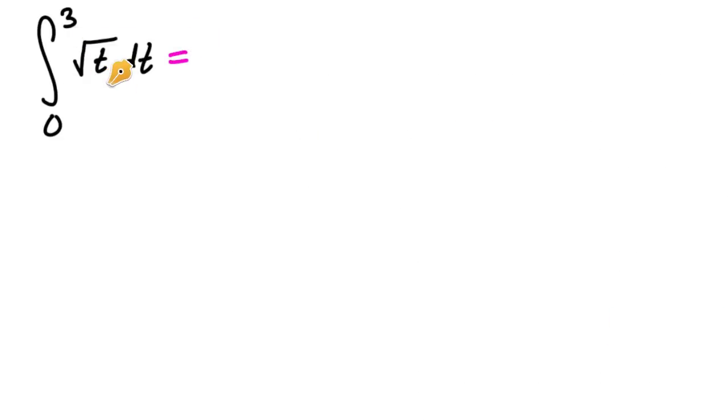So when we're trying to find the integral of roots, basically what we want to do is convert it into an exponent. So this is going to be t to the 1 half dt, kind of like when we were getting derivatives. And then you just use the backwards power rule, just like normal.